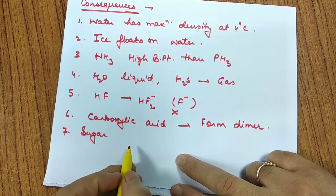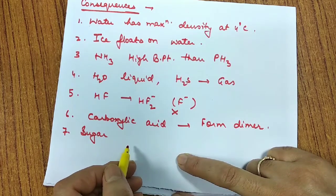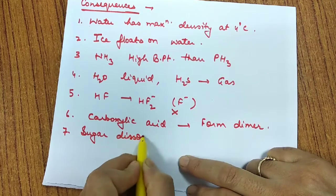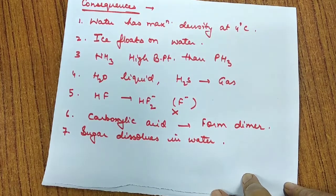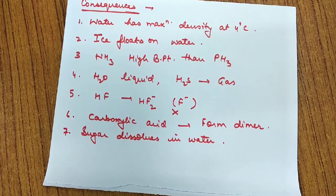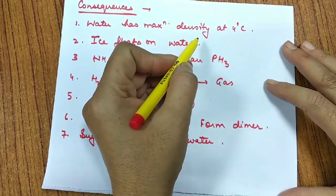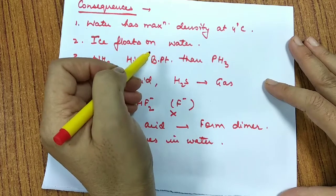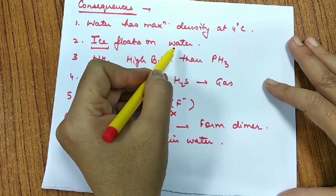Sugar, being a covalent molecule, should not dissolve in a polar solvent like water — 'like dissolves like' is the best rule of solubility. But sugar dissolves in water. Similarly, alcohol dissolves in water. This happens because of Hydrogen bonding — a new bond forms between these molecules, holding them together strongly. Water has maximum density because ice has vacant cage-like spaces due to Hydrogen bonding, which makes it less dense, so ice floats on water.